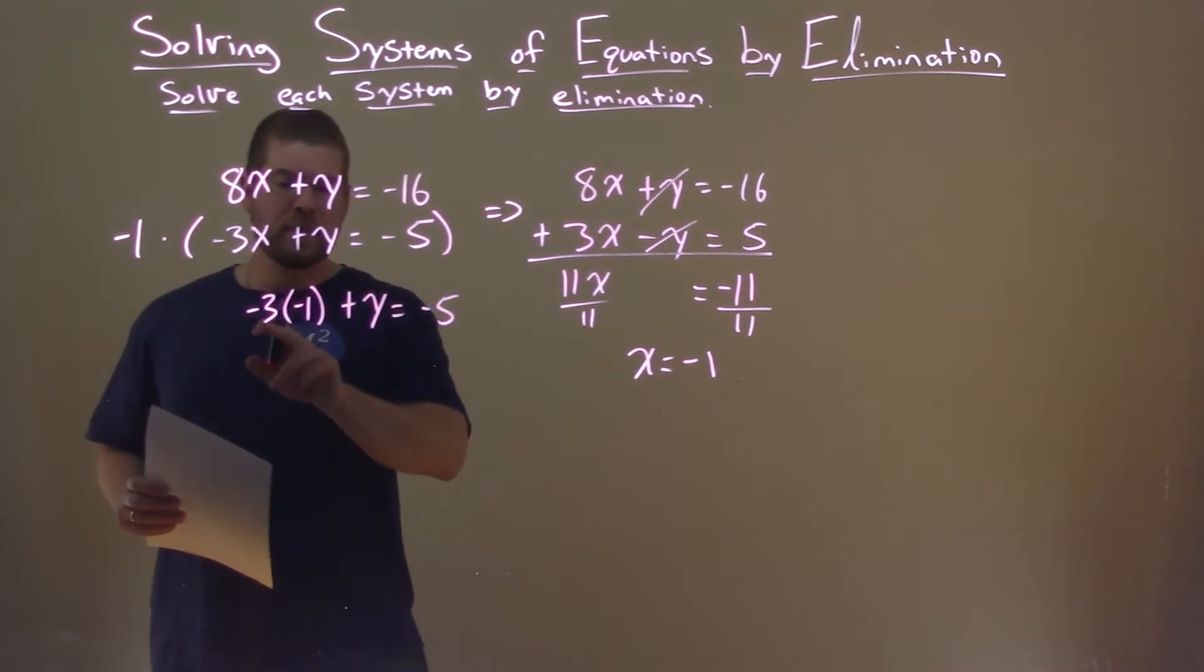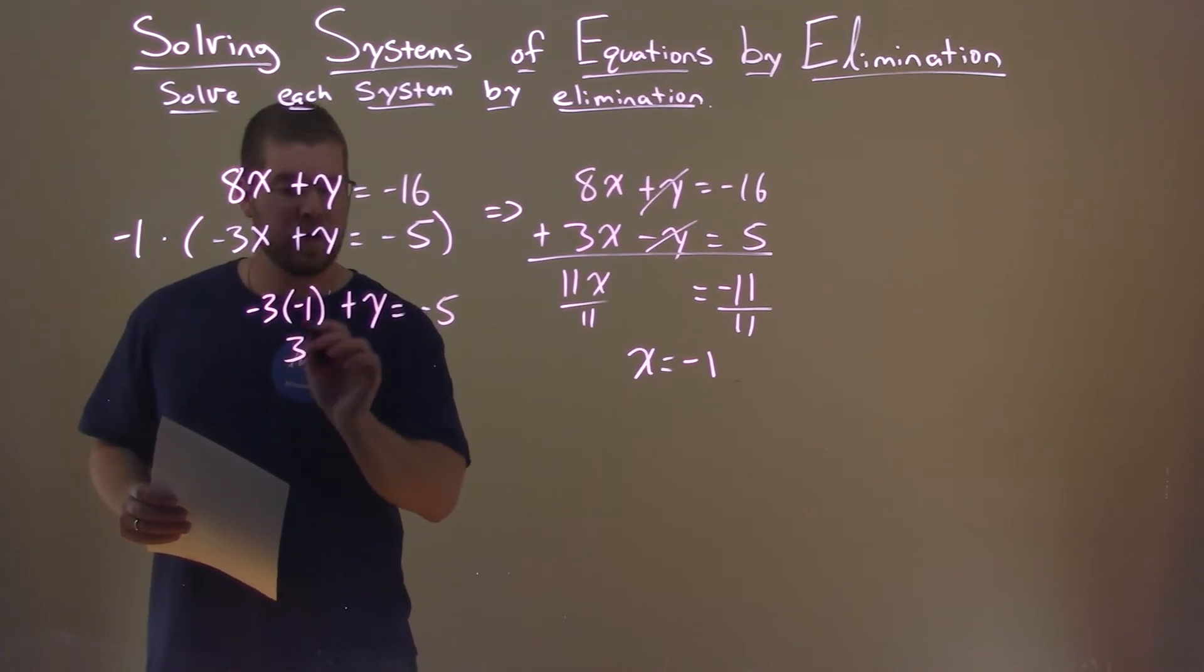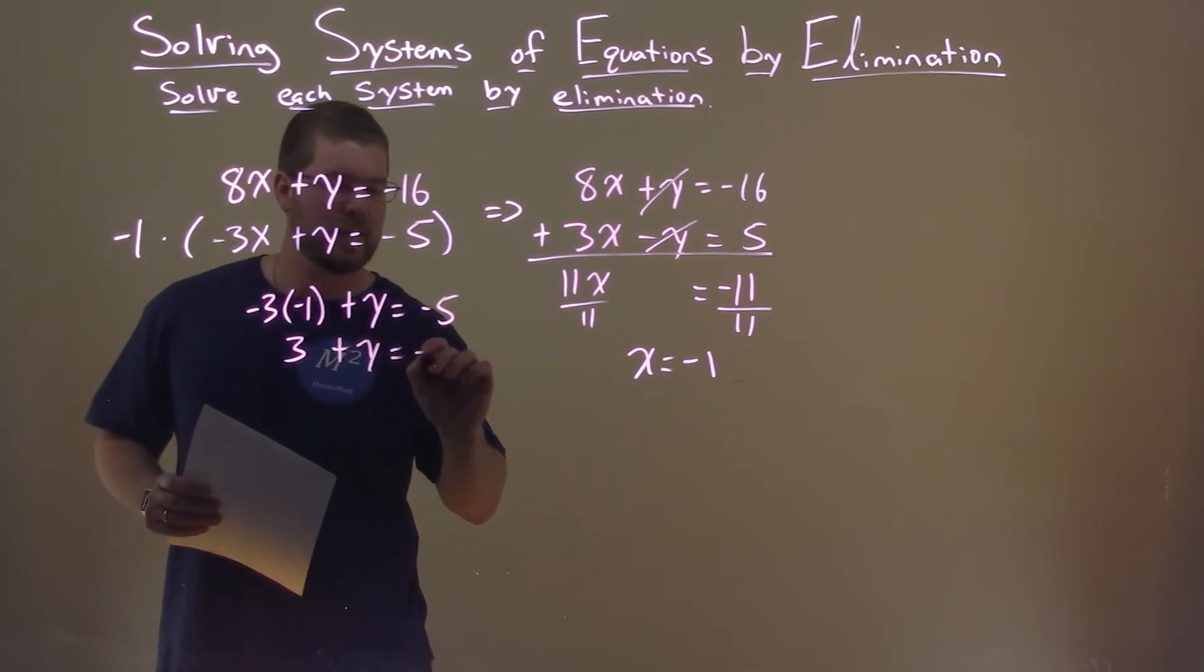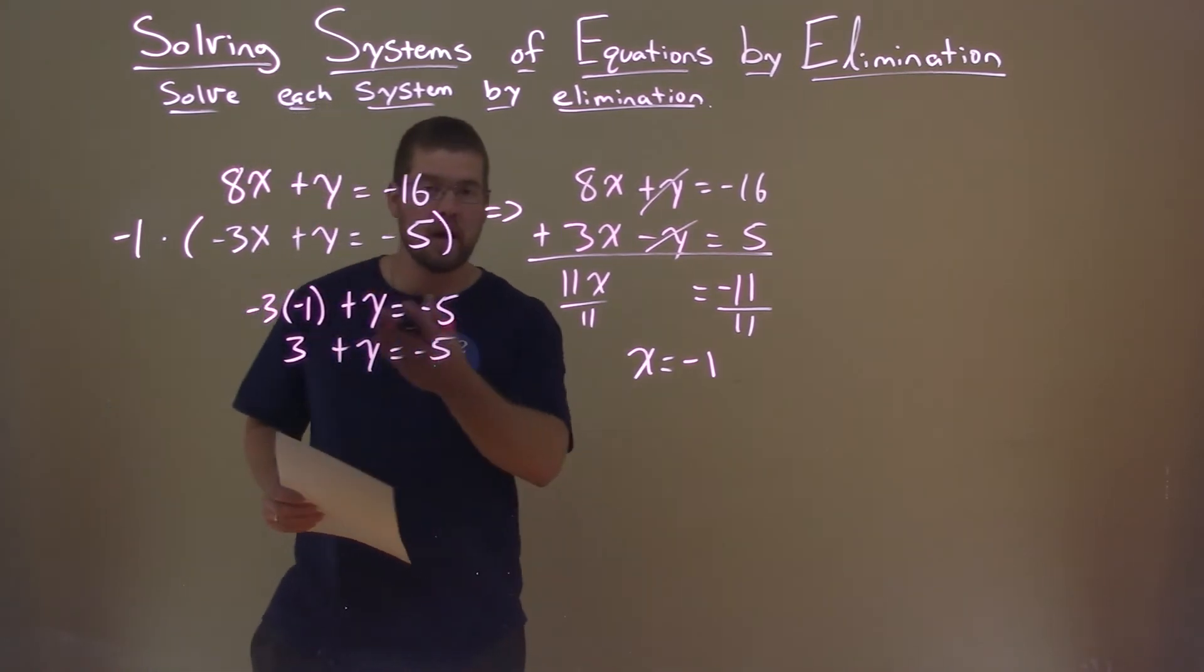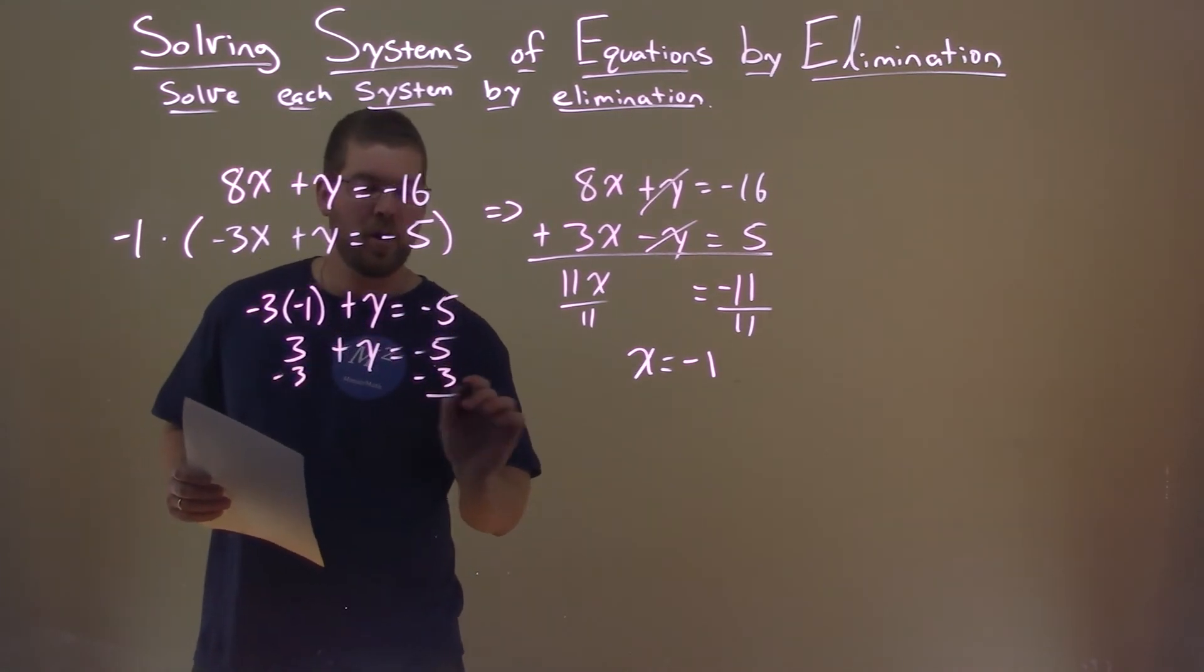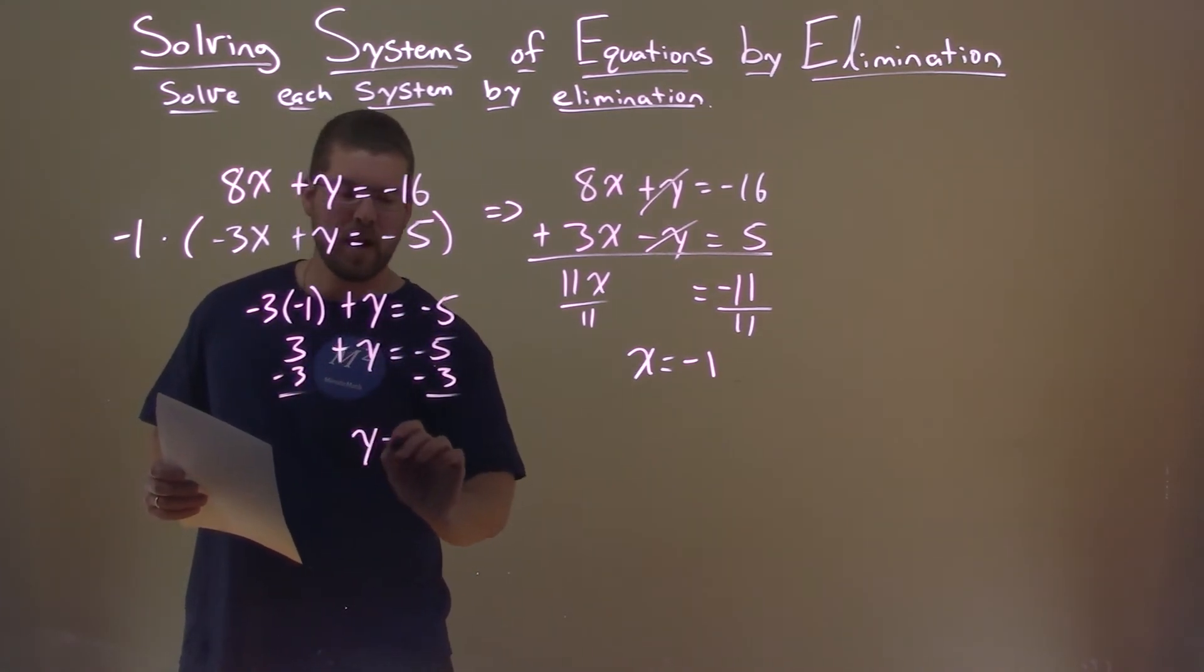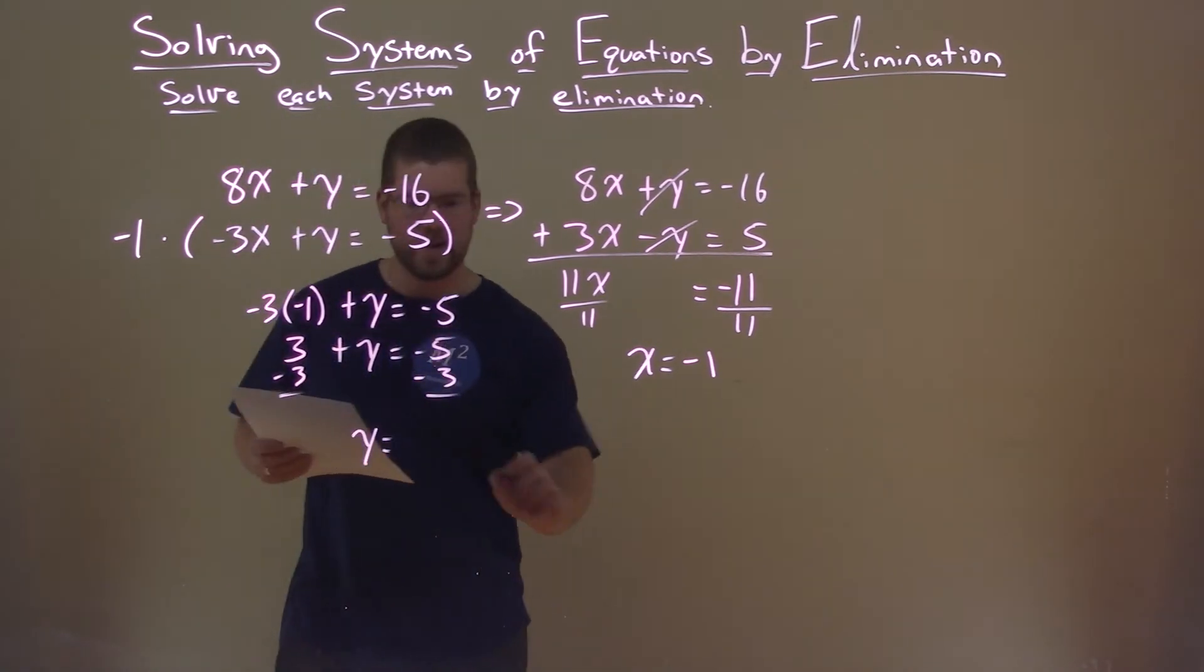All right, now what we need to do, negative 3 times a negative 1 is a positive 3, positive 3 here, plus y equals a negative 5. From there, we subtract 3 from both sides, and we're already there. Y equals negative 5 minus 3 is a negative 8.